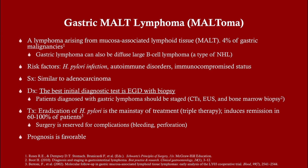There are a couple of other lower-yield cancers. Gastric MALT lymphoma comes from mucosal-associated lymphoid tissue and makes up about 4% of gastric malignancies. There are other gastric lymphomas, the big one being diffuse large B-cell lymphoma. With MALT lymphoma, there is a strong association with H. pylori infection. The symptoms and diagnosis are the same as adenocarcinoma, but the treatment is different. With MALT lymphoma, if you treat H. pylori with triple therapy — amoxicillin, clarithromycin, and omeprazole — in most instances you will induce remission, which is a much better prognosis.